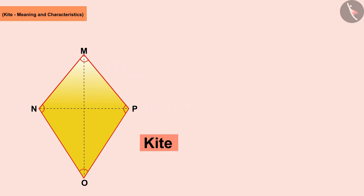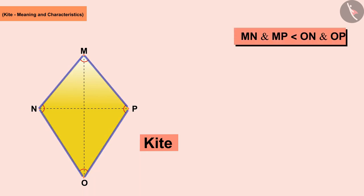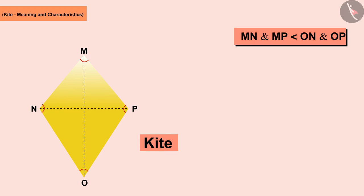If you look at it, you will see that this pair of arms MN and MP is smaller than both other sides ON and OP. This kite has two diagonals: MO and NP. The two diagonals intersect each other at a point X. Let us discuss these.